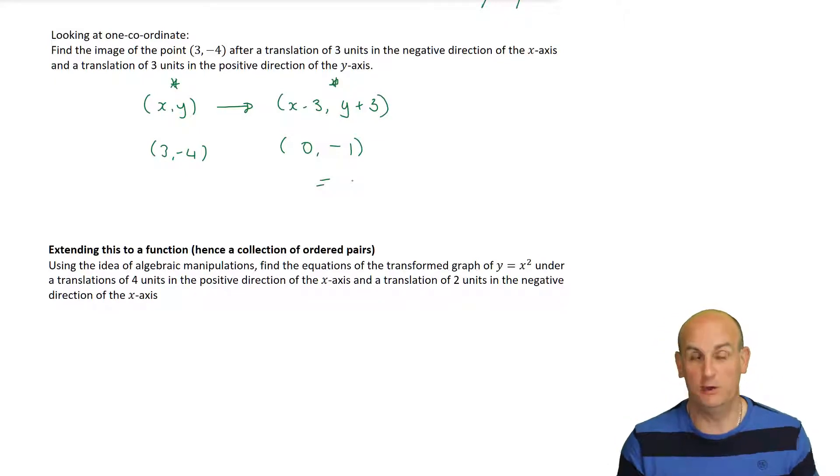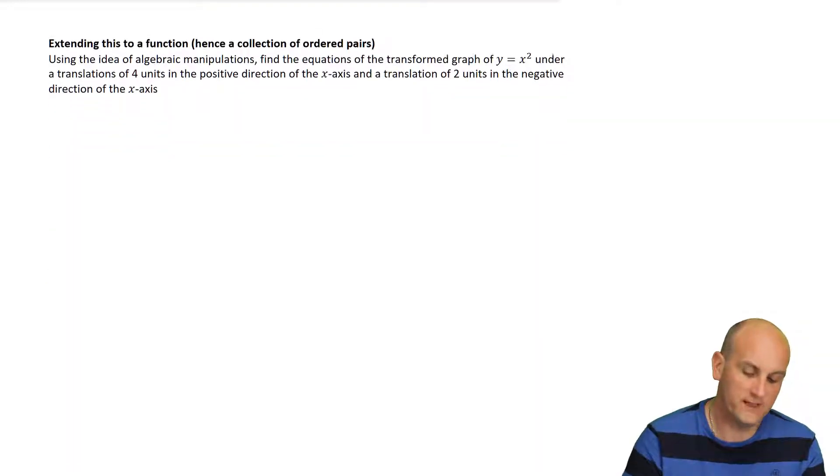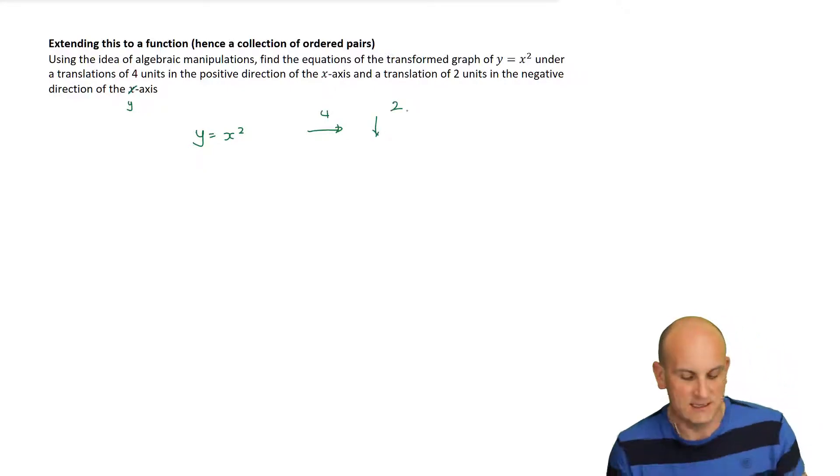Now, obviously, when I have a function, I'm not going to do that to every single point. My mind would go mental. So, what we want to be able to do is take the algebra for original function, and turn it into an equation for my image, or that image of a function. So, my advice is, watch this a couple of times. It's all in the language, really. It's all in what I say and what I do. Right, using the idea of algebraic manipulations, find the equation of the transformed graph of y equals x squared. So, here's my original graph, y equals x squared, under a translation of four units in the positive direction of the x axis, and translation of two units in the negative direction, and we'll make that of the y axis so that it makes a lot more sense, two units in the negative direction.